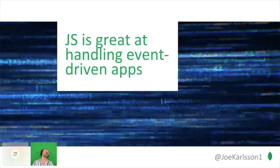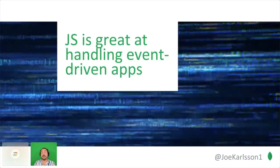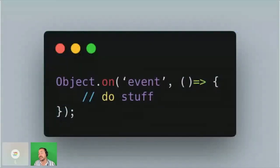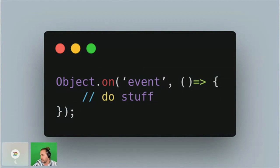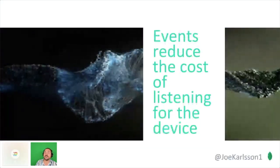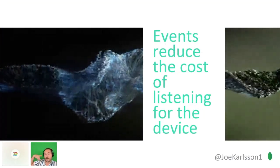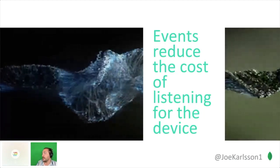JavaScript is great at handling event-driven applications. We already have callback functions — on some asynchronous event, you do something. It's the foundation of Node, and how we handle asynchronous events in the cloud. If you think about IoT device architecture, they're traditionally waiting for events to fire on some sensor — maybe a luminescence event on a light sensor, or a moisture level, or a carbon monoxide level — before triggering code to run. The world is just a series of asynchronous functions we're developing code around. Events also reduce the cost of listening on a device with a single-threaded event loop.